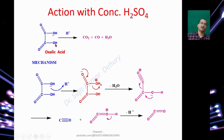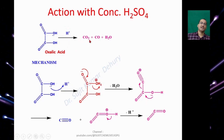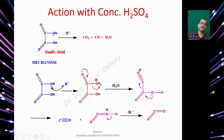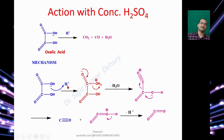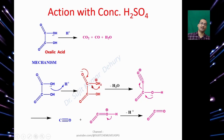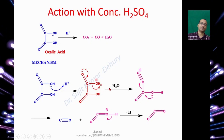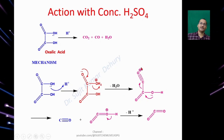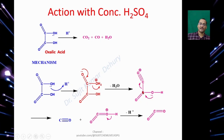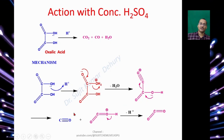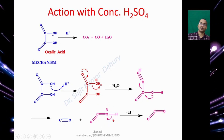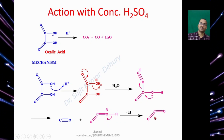If we treat Oxalic Acid with Sulphuric Acid (H⁺), it gives Carbon Dioxide, Carbon Monoxide, and water. The OH lone pair acts as nucleophile and attacks H⁺, giving a protonated OH₂⁺ form. When the oxygen lone pair returns, it breaks the C–O bond on OH₂⁺ giving neutral water. This yields a protonated form of Carbon Monoxide, then the C–C bond breaks giving neutral CO. Finally, loss of proton gives Carbon Dioxide.